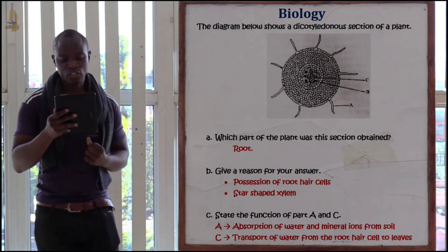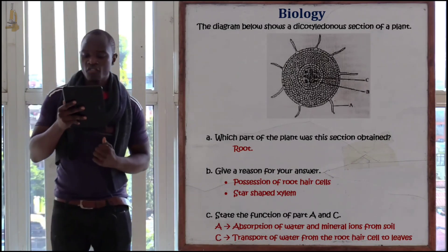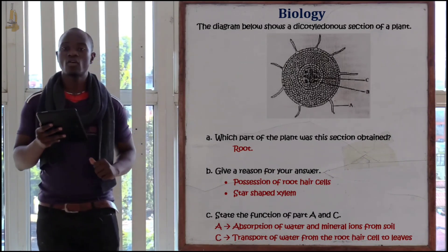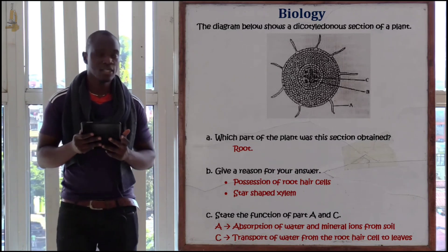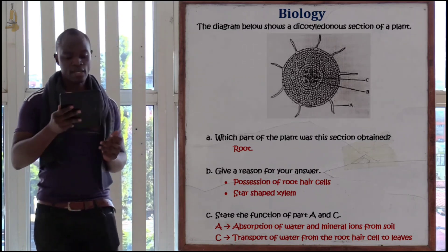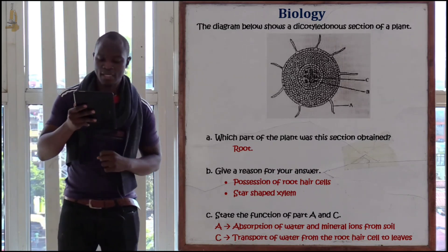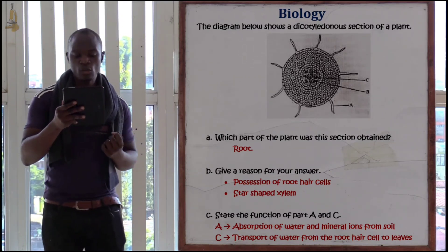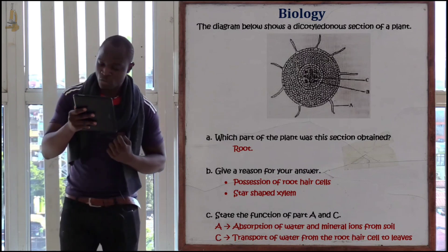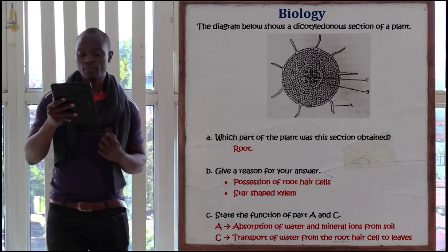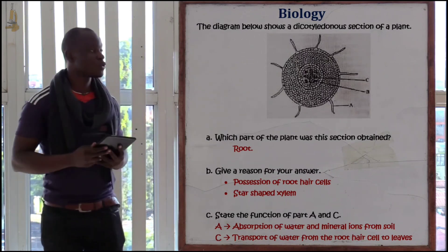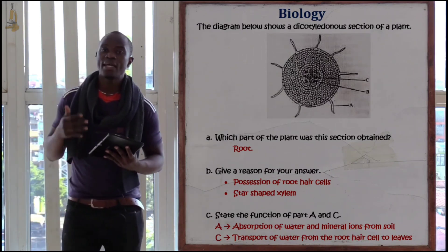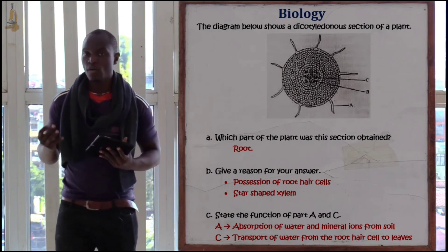The diagram below is a transverse section of a certain part of a dicotyledonous plant. The first question, which is A, is asking: which part of the plant was this section obtained from? This section was obtained from a dicotyledonous plant.